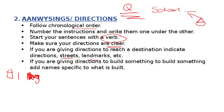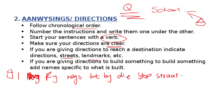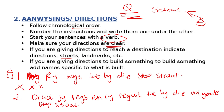You start with a verb. For example: 'Ry regs tot by die stopstraat, dan draai jy regs en ry reguit tot by die volgende stopstraat.' Then you give a landmark — 'Op jou regterkant sal 'n kliniek wees' — so they can know they're on the right path. Then skip a line and continue: 'Draai weer regs en op jou links is daar 'n veld.'